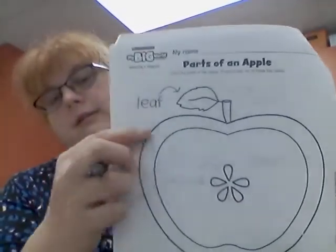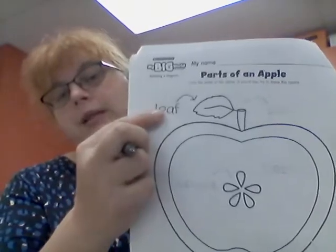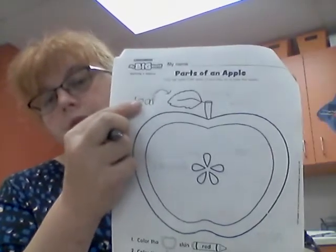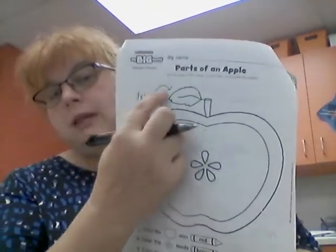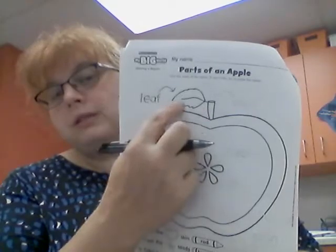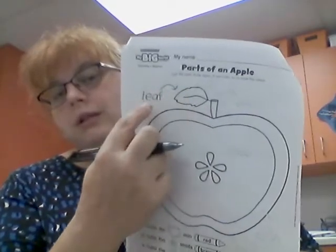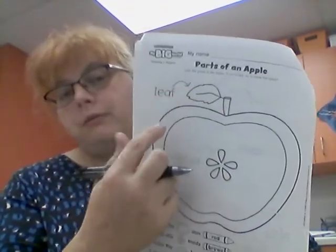This is a label. A label tells you what a picture is of. So a leaf — anybody that looks at this will know that it's a leaf.